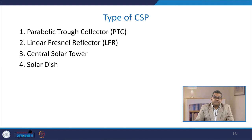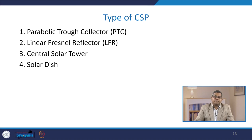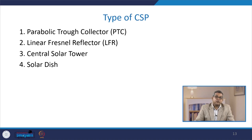Let us discuss the different types of CSPs. One is the parabolic trough collectors, PTC; then linear Fresnel reflectors, LFR; then central solar tower; and solar dish.